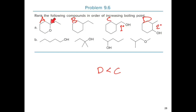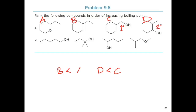Between molecules A and B, we have an ether and a hydrocarbon. Because the ether contains an oxygen atom, it is capable of dipole-dipole intermolecular forces and would have a higher boiling point compared to the hydrocarbon molecule B. So B is less than A, and A is less than D because we have an ether versus an alcohol.